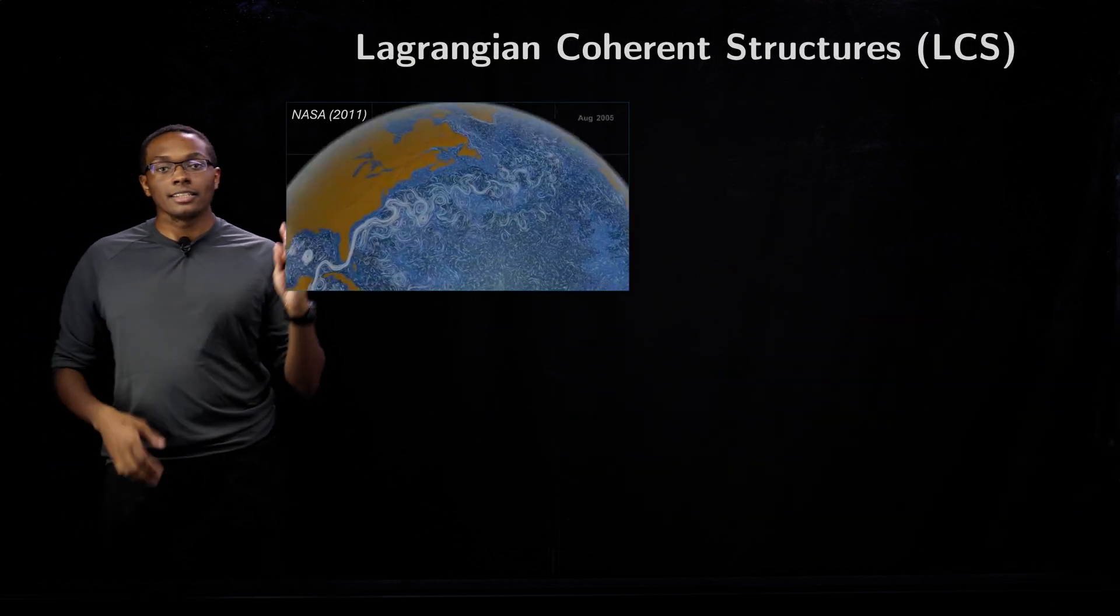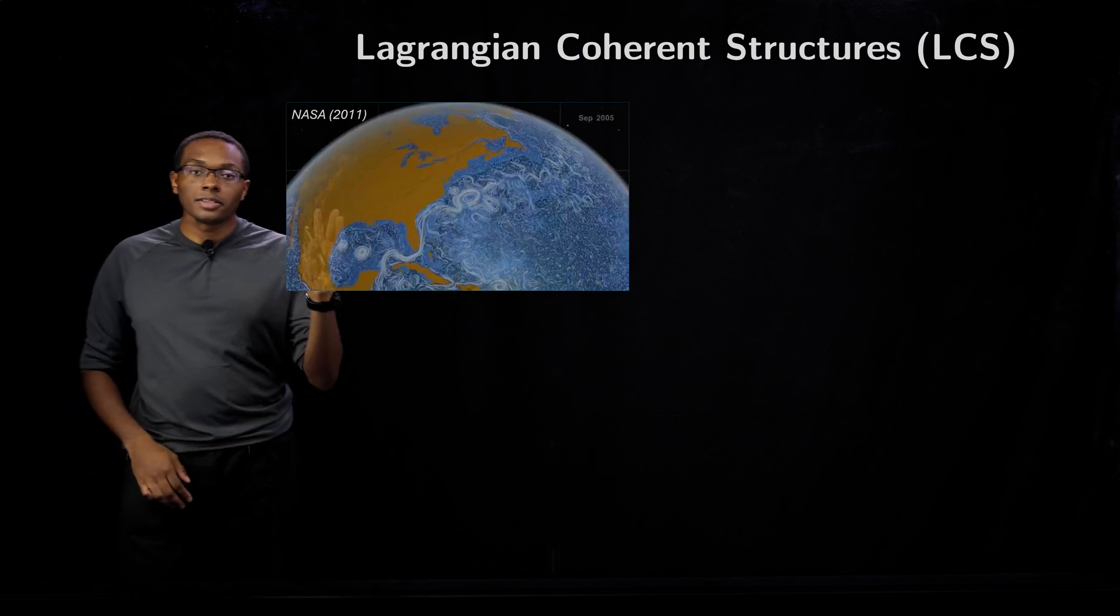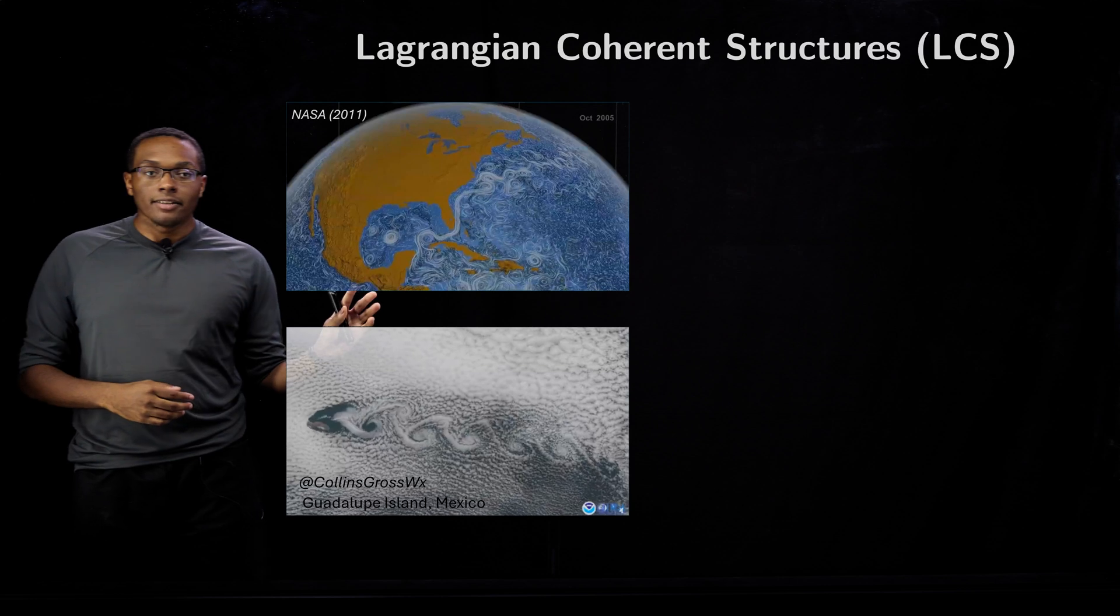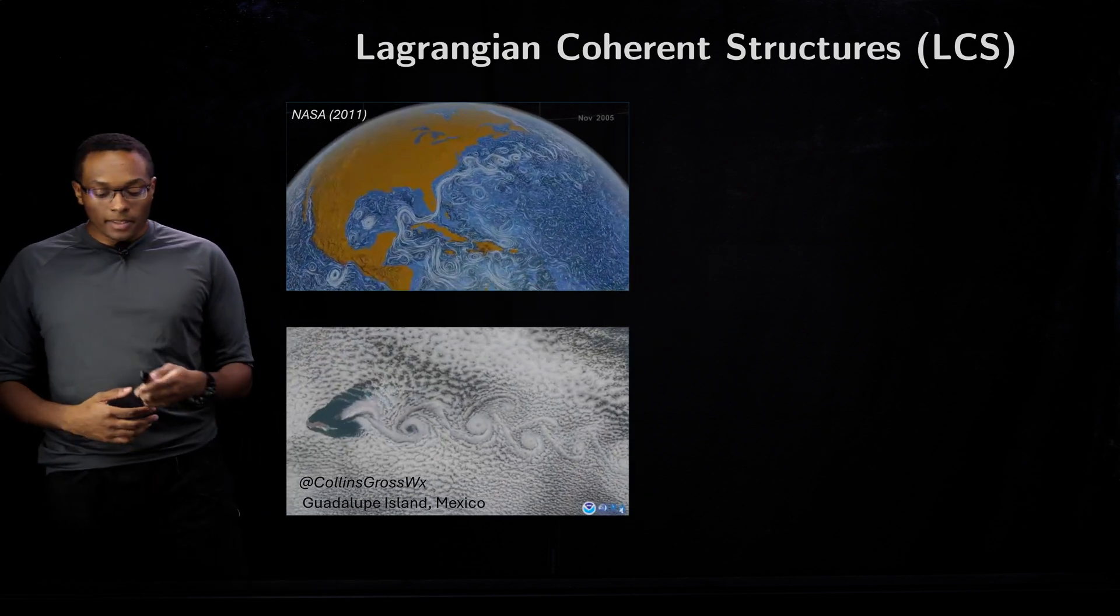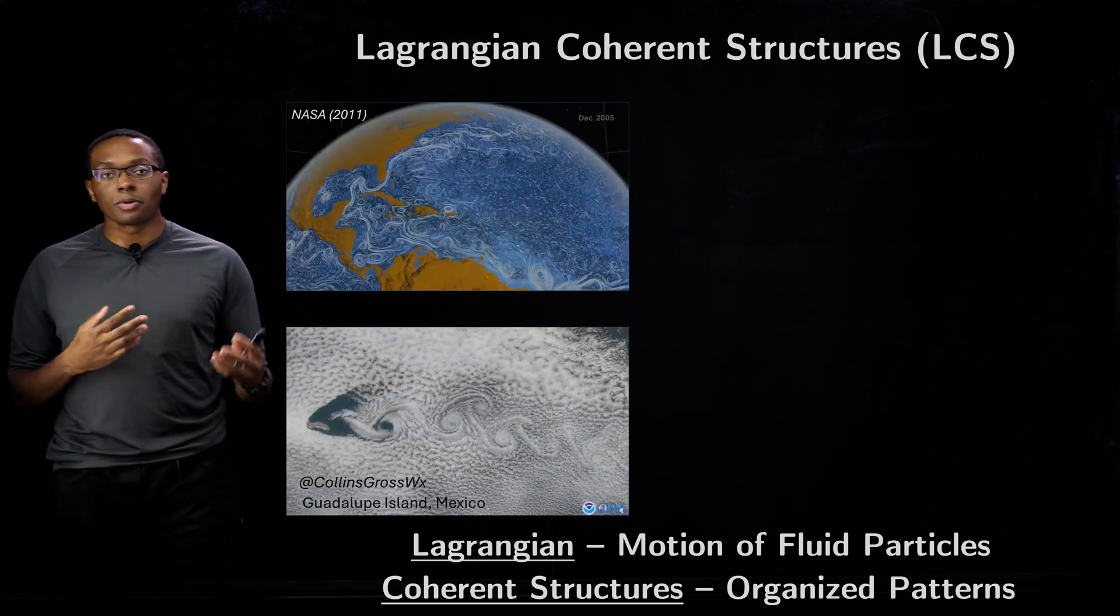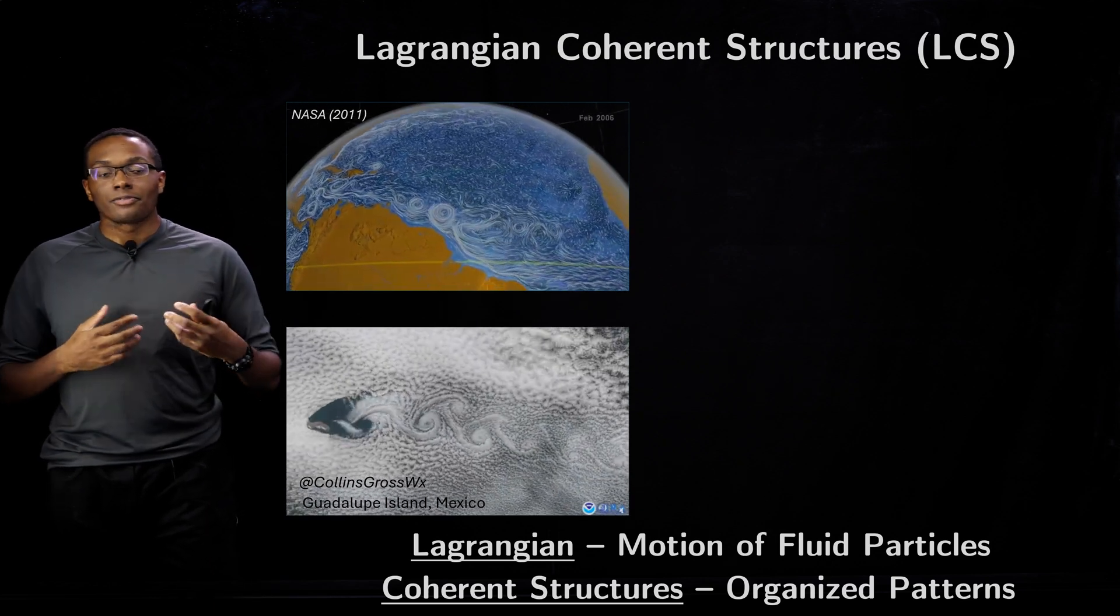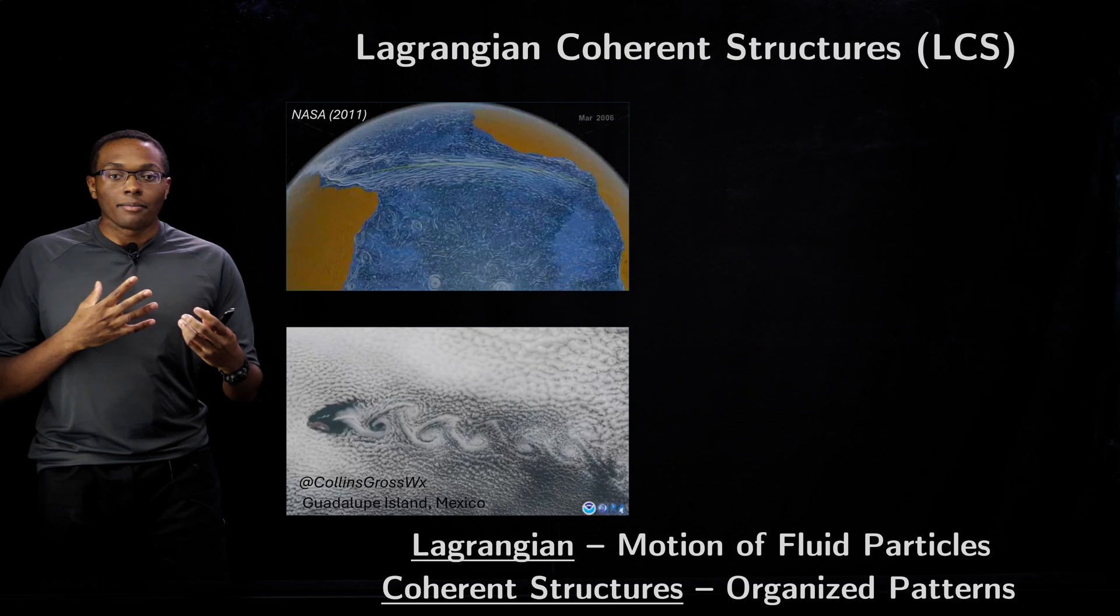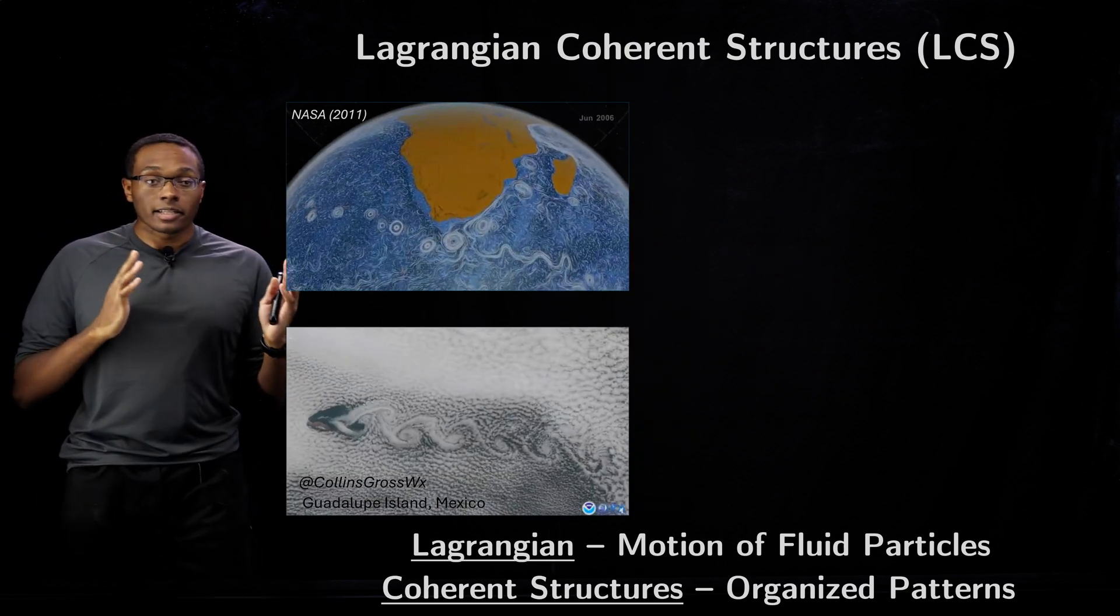We've seen these LCS in a number of different areas including the ocean as depicted by this animation from NASA as well as in the atmosphere as depicted by these satellite images. The term Lagrangian refers to the motion or transport of individual fluid particles, and the coherent structures term refers to patterns, whether recurring or organized, that users can visualize and understand clearly.